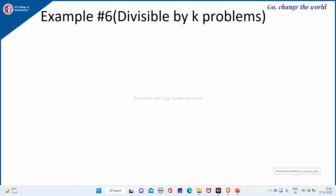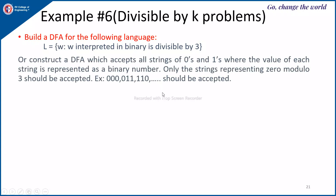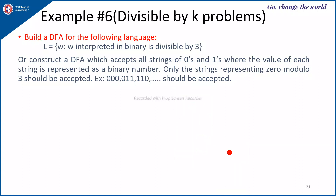The next variety of problems is 'divisible by k' problems under the design of DFA. The first problem is: build a DFA for the language L where W interpreted in binary is divisible by 3. This could also be asked as: construct a DFA which accepts all strings of 0s and 1s where only strings representing 0 modulo 3 — that is, multiples of 3 like 0, 3, 6, 9 — should be accepted.